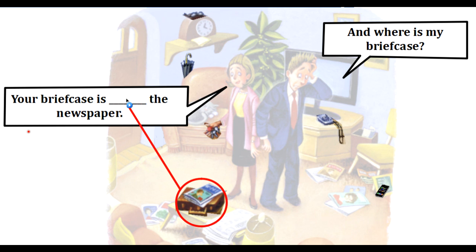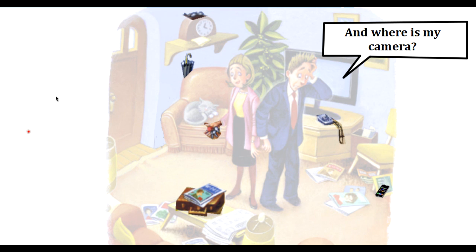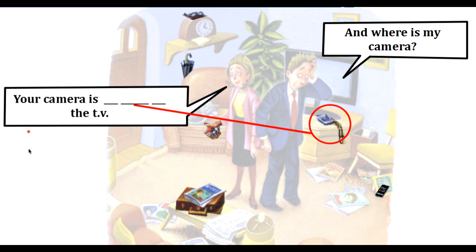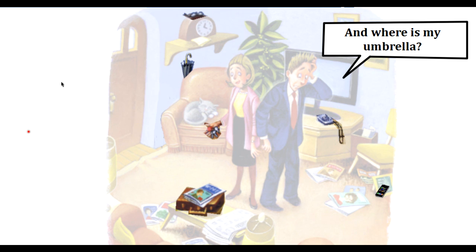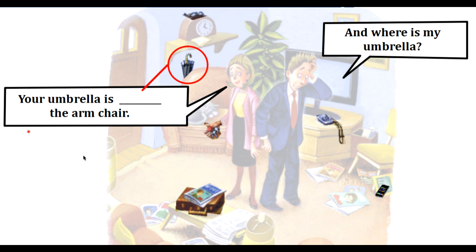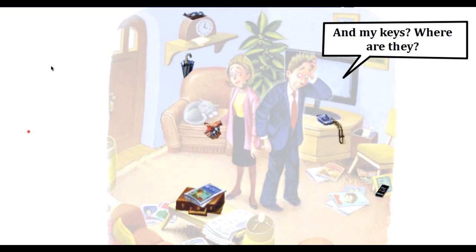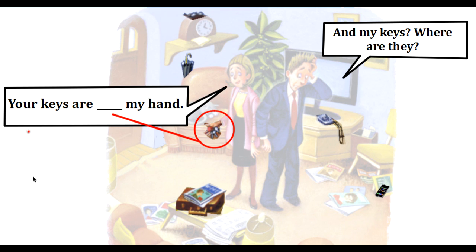And where is my briefcase? Your briefcase is under the newspaper. And where is my camera? Your camera is in front of the TV. And where is my umbrella? Your umbrella is behind the armchair. And my keys — where are they? Your keys are in my hand.